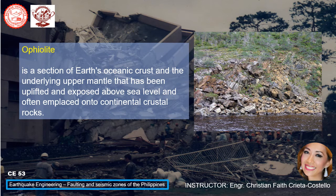What are the Zambales ophiolites, or the plain definition of ophiolite? An ophiolite is a section of Earth's oceanic crust and underlying upper mantle that has been uplifted and exposed above sea level, often emplaced onto continental crustal rocks. In a closer look, it appears like the rocks shown here in the right-side photo.